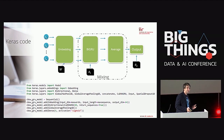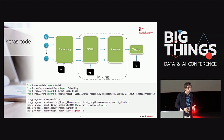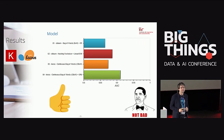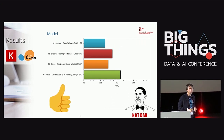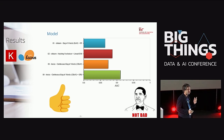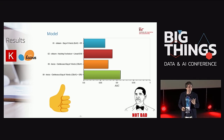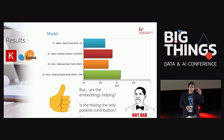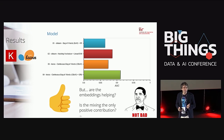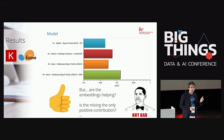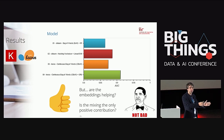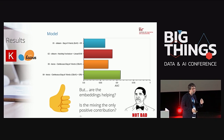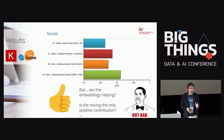We train this model and test it — now it works. But a subtle question arises: is it the mixing model that's helping, or were the learned embeddings also contributing? Maybe we should also think more carefully about the general framework and consider language models.